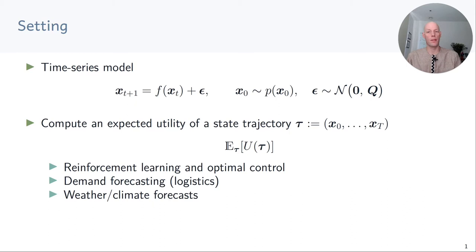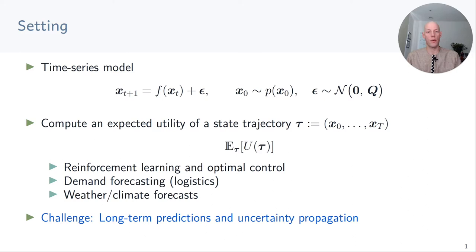The main challenge in all of these scenarios is to do long-term predictions which requires uncertainty propagation. Uncertainty could creep in through uncertain initial states, noise in the system, or if we learn f, uncertainty about some model parameters.